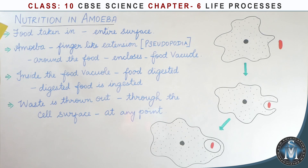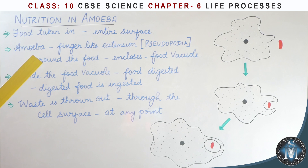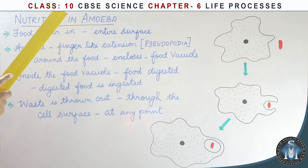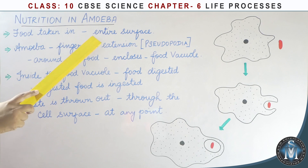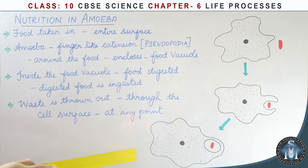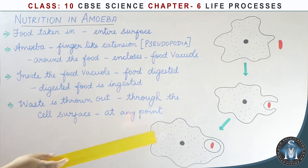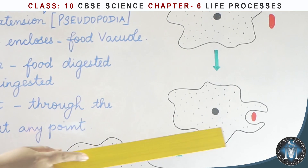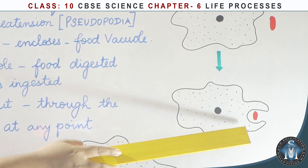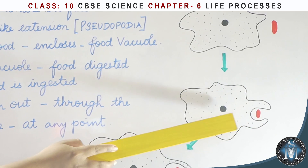Next, we will talk about nutrition in amoeba. Amoeba is a unicellular organism — it has only one cell. Amoeba surrounds food at any surface or point using finger-like extensions called pseudopodia.